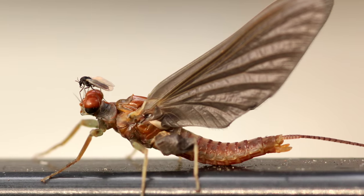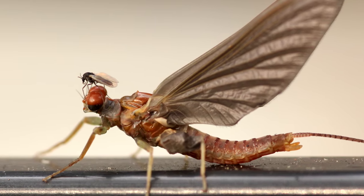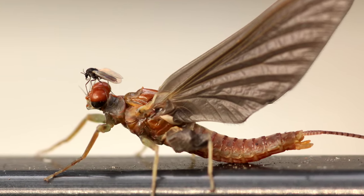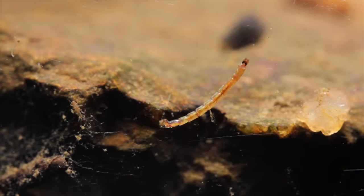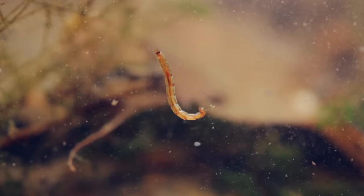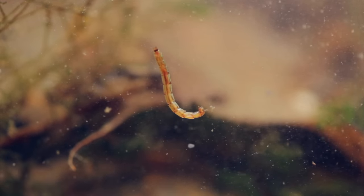Not all midges are super small, but many of them are, like this guy catching a ride on the eyes of about a size 14 Hendrickson. This goes not only for the winged adult stage of their life cycle, but the larval stage as well.